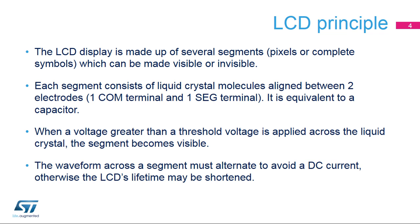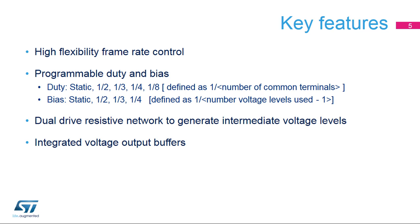The LCD display is made up of several segments, pixels, or complete symbols, which can be made visible or invisible. Each segment consists of liquid crystal modules aligned between two electrodes, one com-terminal and one seg-terminal. It is equivalent to a capacitor. When a voltage greater than a threshold voltage is applied across the liquid crystal, the segment becomes visible. The waveform across the segment must alternate to avoid a DC current. Otherwise, the LCD's lifetime may be shortened. The LCD controller offers a fully programmable interface to control a wide range of LCD displays. The flexible frequency generator makes it easier to scale and fine-tune the frame frequency. The LCD controller supports several duty ratios and bias levels to adapt to a wide range of LCD display characteristics.